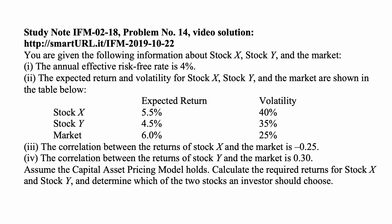The correlation between the returns of Stock X and the market is negative 0.25. The correlation between the returns of Stock Y and the market is 0.30. Assume the capital asset pricing model holds. Calculate the required returns for Stock X and Stock Y and determine which of the two stocks an investor should choose.